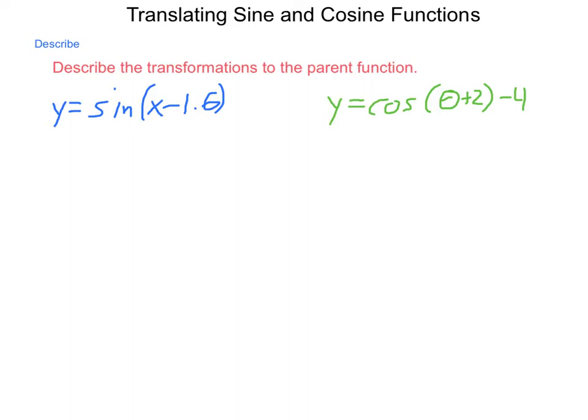So describe the transformations that have taken place to the parent function. If y equals sine of x minus 1.6, how is that different than its parent function? Well, first, what is the parent function? The parent function here was simply y equals sine of x. What difference does it make to have that minus 1 and 6 tenths inside of the parentheses? Well, the difference is it has been moved to the right 1 and 6 tenths units.